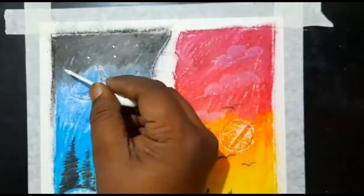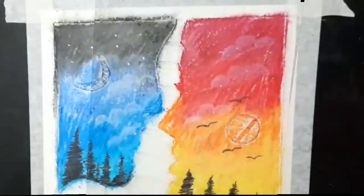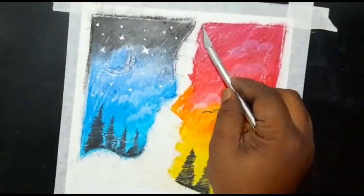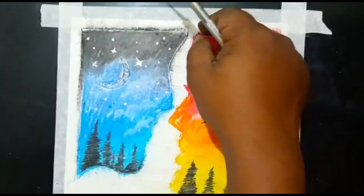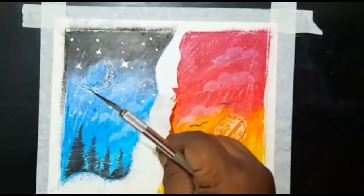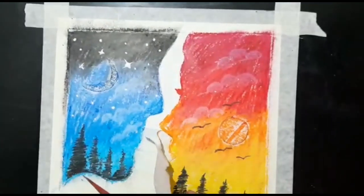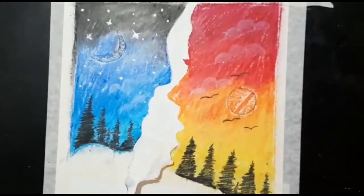Now I'm putting some stars. You can apply whitener to make the stars. Actually I ran out of whitener, so I use nail paints.